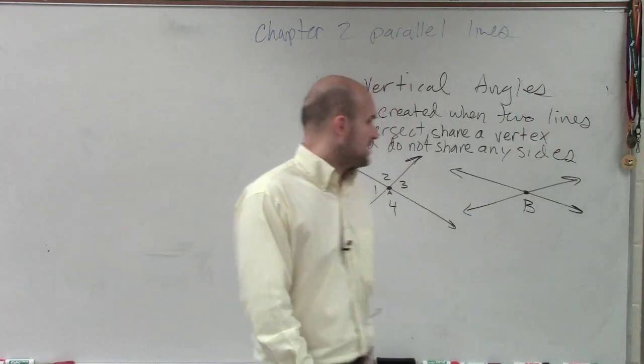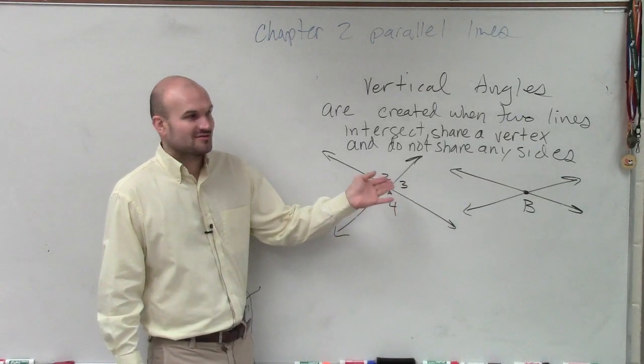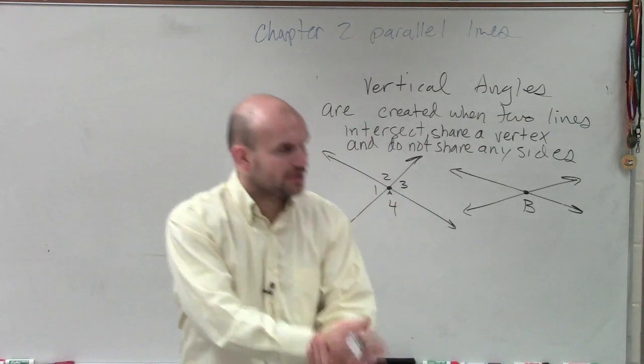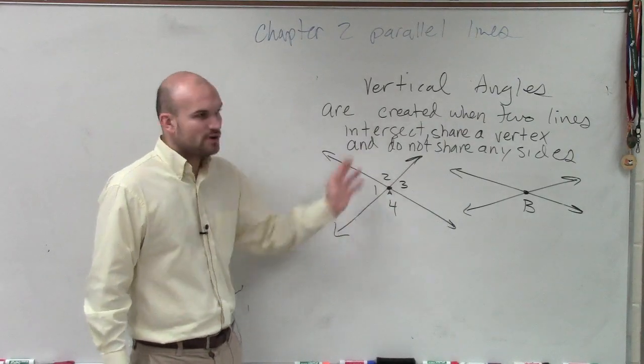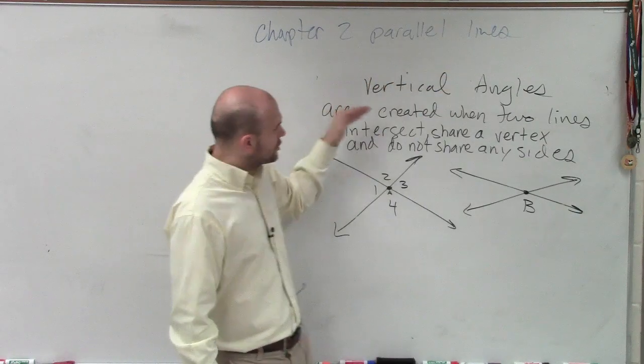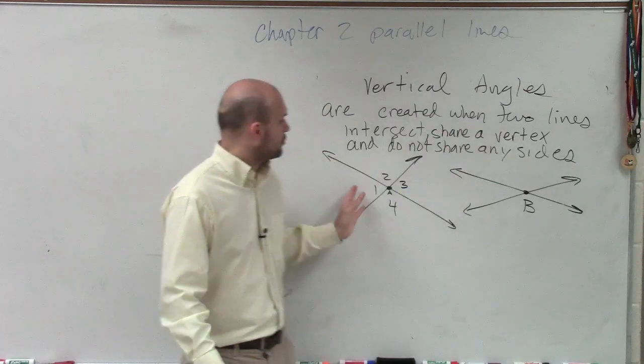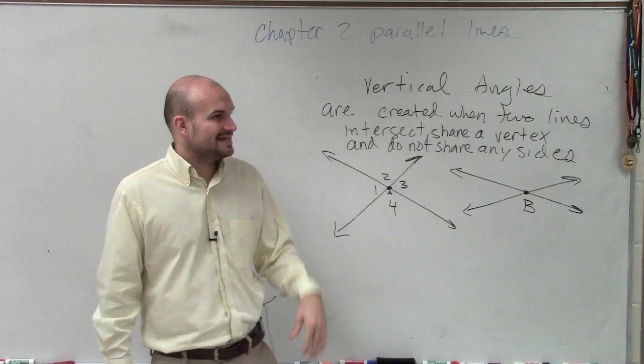Robert, why don't you give it a shot? Do you hear my question? Do you want me to repeat it? Okay, I'll repeat the question. We formed two intersecting lines. Two lines intersected. We formed four different angles, right? The definition says vertical angles are created when two lines intersect, they share a vertex and do not share any sides. So what two angles out of here do not share any sides?